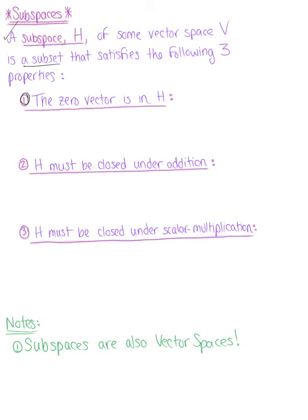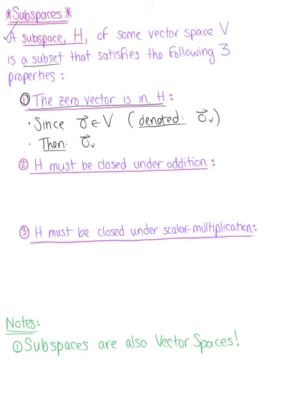Property one: the zero vector is in the subspace. Since the zero vector is an element of our subspace — often denoted as the zero vector sub V — and since the zero vector is in the vector space, we can conclude that the zero vector is in the subspace.